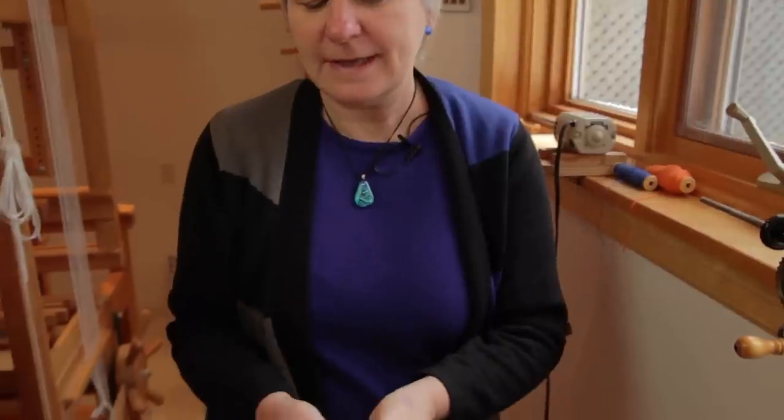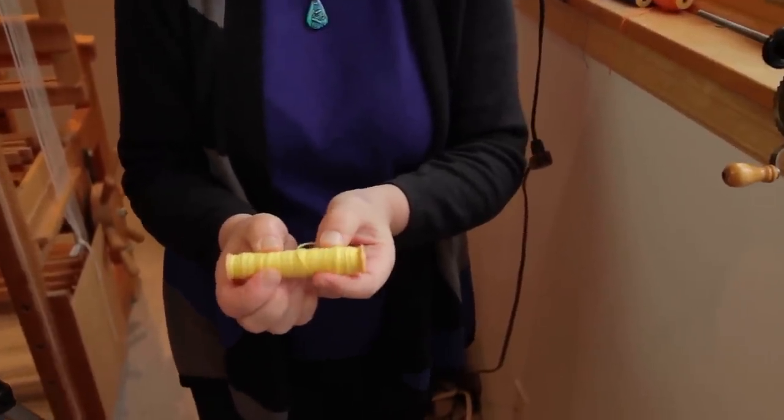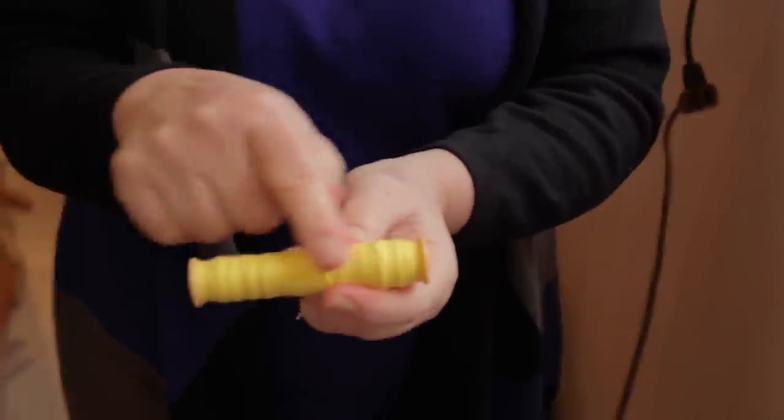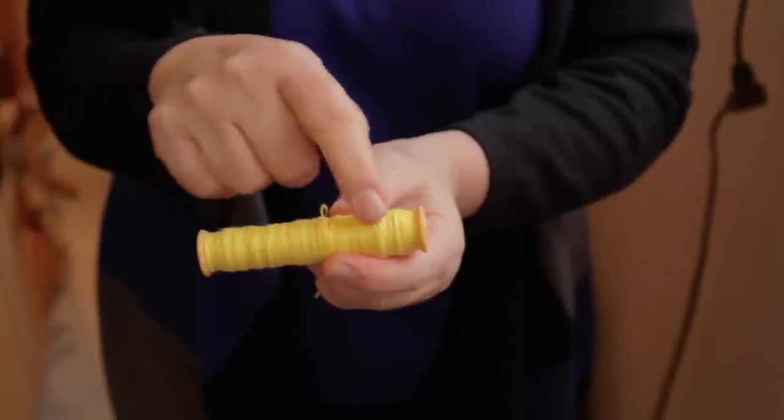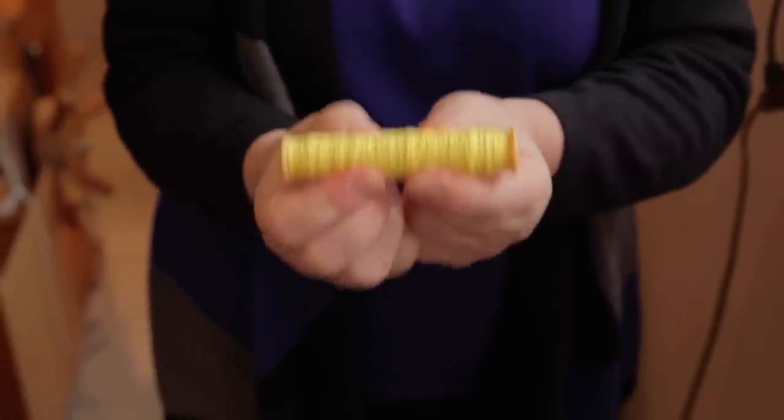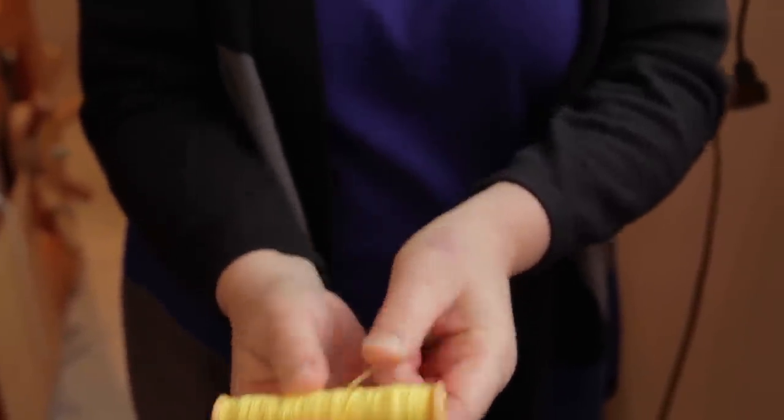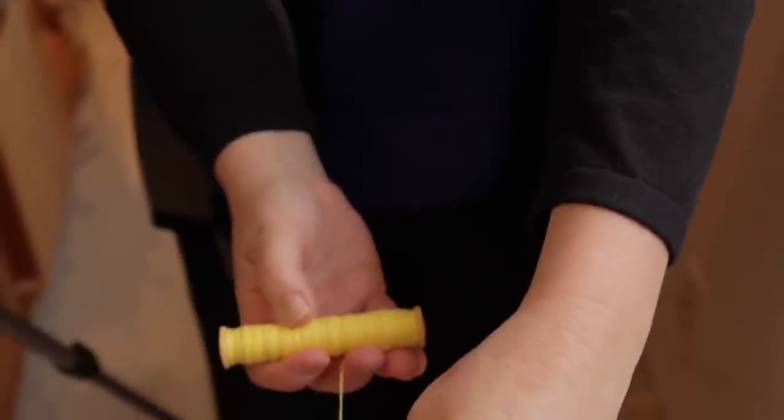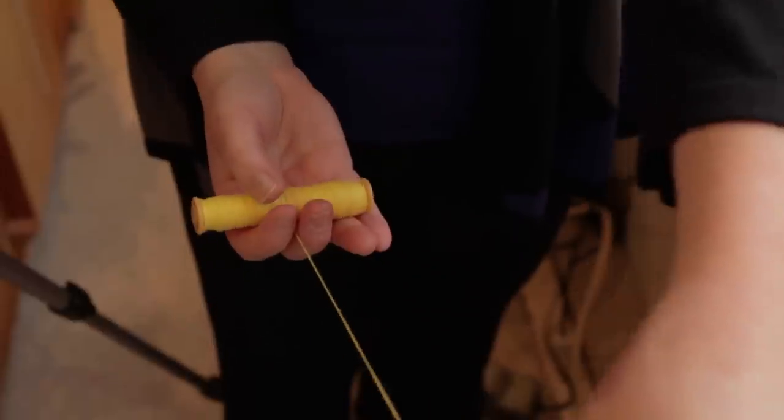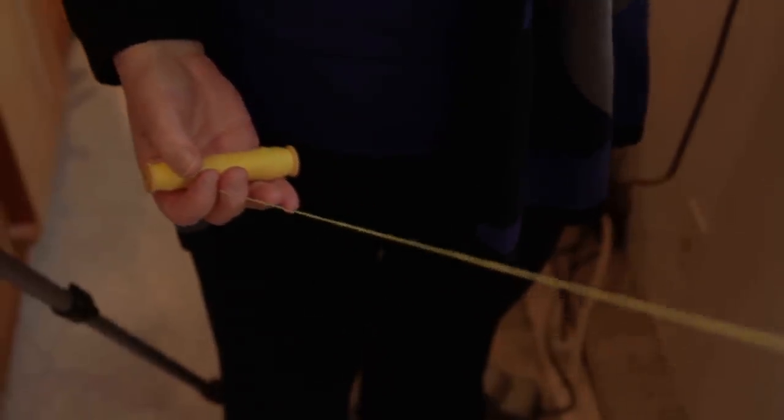And you can see that the bobbin is very, very firmly wound. There is no squishiness. It is below the surface of the flanges. Well, a little bit above there. But this is a good amount of yarn to put on your bobbin. And when I actually put this into my shuttle, it will feed straight off the center and not catch in my shuttle at all.